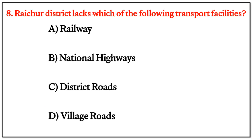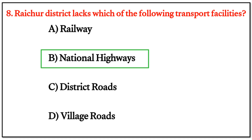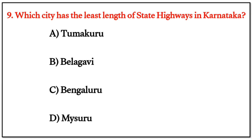MCQ Question 8: Raichur district lacks which of the following transport facilities? The correct answer is option B — National Highways.